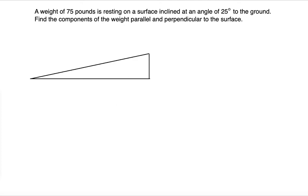This angle is the angle of inclination of 25 degrees. This is where the surface level meets the ground level — this is the ground level, the horizontal line. So we can attach the weight here.